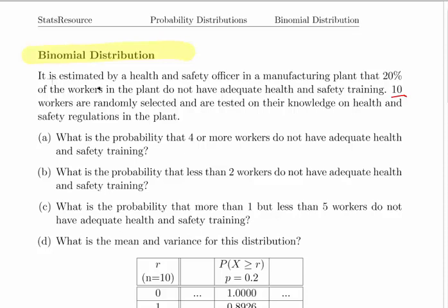It is estimated by a health and safety officer in a manufacturing plant that 20% of the workers in the plant do not have adequate health and safety training. Ten of the workers are randomly selected and are tested on their knowledge of health and safety regulations in the plant. So the two key things here are: n equals 10 and p equals 0.20.